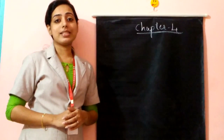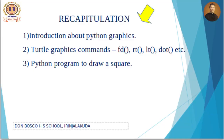In the previous class we discussed the introduction to Python graphics — the windows we use: the Python shell, the Python editor window to write programs and view results, and the turtle graphics window. We also discussed graphical commands used in turtle graphics: forward, right, left, dot, etc. We also covered the first program — how to draw a square using turtle graphical commands.